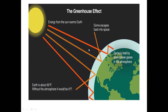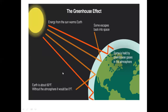Some of them are absorbed by the Earth's surface, while others, as you can see, they are reflected back. These reflected rays are trapped by some gases present in the atmosphere of the Earth, which results in increase in the atmospheric temperature.